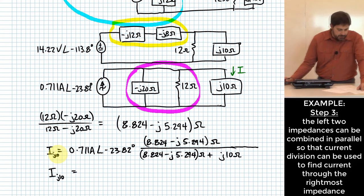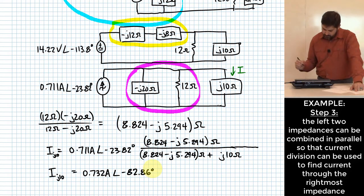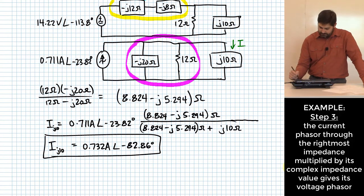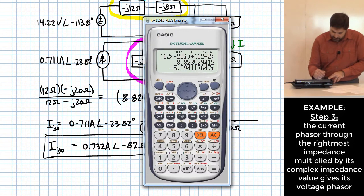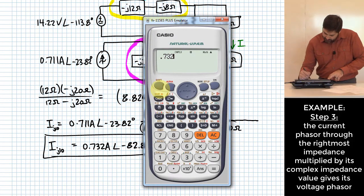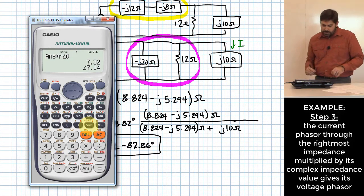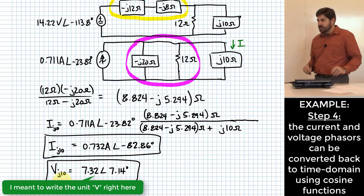That was half of what I wanted you to find. What was the other half? Voltage. How do I do voltage? I take current and multiply by complex impedance. That gives me voltage. So 0.732 at negative 82.86 multiplied by J10 gives me 7.32 at an angle of 7.14.